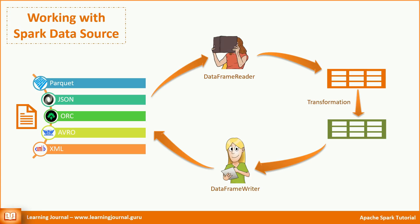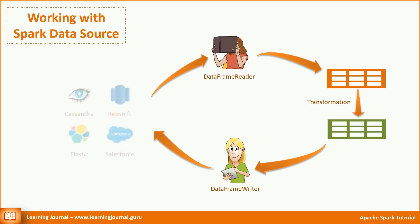There is one crucial point to note here. I am not talking about reading something which doesn't qualify to have a schema. If the data is structured or semi-structured where you can define a row-column schema, you should be using DataFrame Reader and DataFrame Writer. Every standard Spark 2.x connector follows this convention. You want to connect to Cassandra, Redshift, Elasticsearch, or even Salesforce — they all offer you a DataFrame Reader and a DataFrame Writer. When you don't have a schema or the data source provider doesn't offer a Spark 2.x connector, you will fall back to RDDs, and we will talk about reading RDDs in a later video.